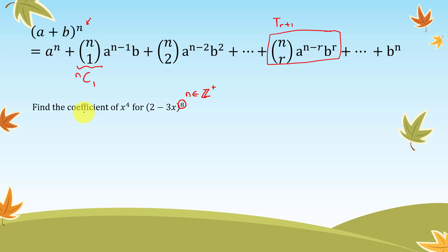For this question, we want to find the coefficient of x to the power of 4. I only want to focus on x to the power of 4. I don't want to expand everything. So let us use the formula for t r plus 1. n is 8, 8Cr, a is 2 to the power of 8 minus r, negative 3x to the power of r.